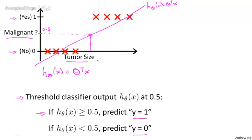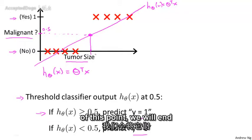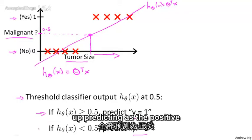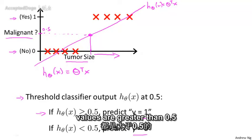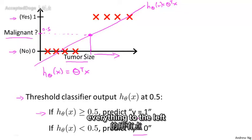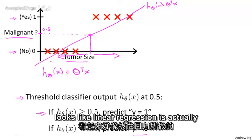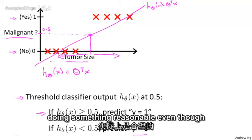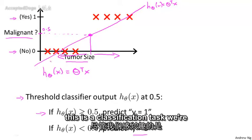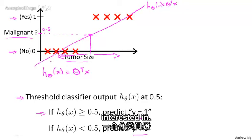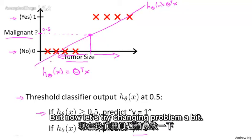And thus, using linear regression this way, everything to the right of this point, we will end up predicting as the positive class because the output value is greater than 0.5 on the vertical axis. And everything to the left of that point, we will end up predicting as a negative value. In this particular example, it looks like linear regression is actually doing something reasonable, even though this is a classification task we're interested in.